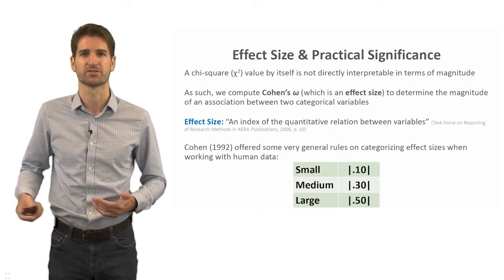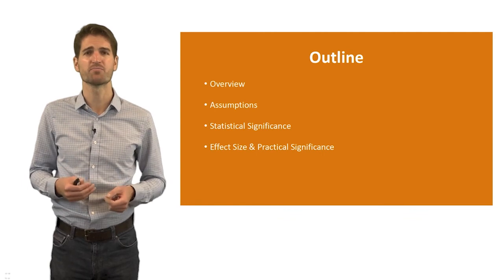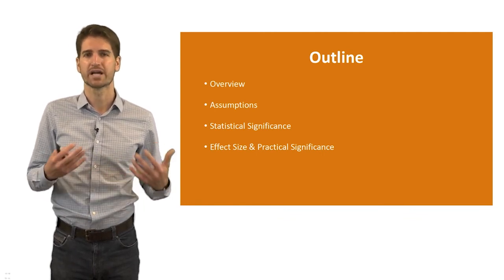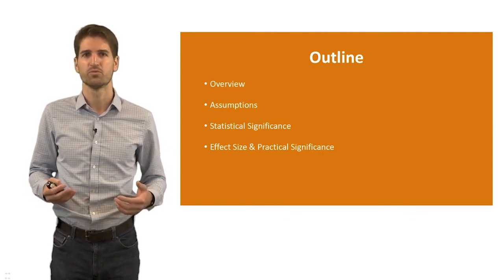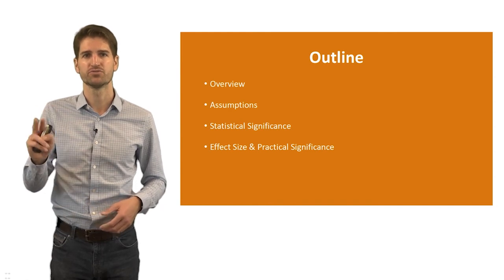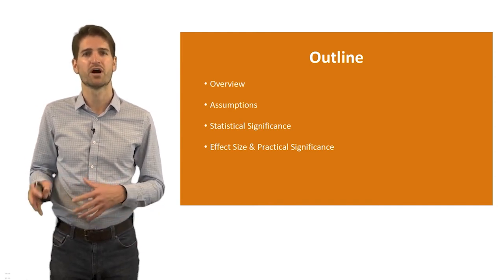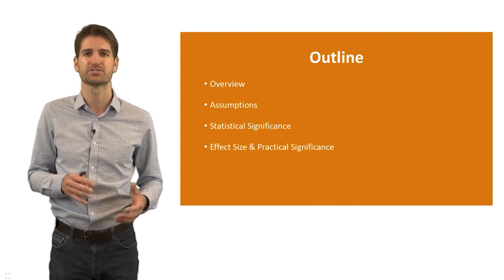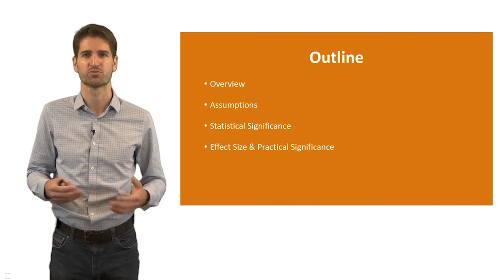To sum up, in this lecture we described what a chi-square test of independence is, discussed its two statistical assumptions, and covered statistical significance, practical significance, and effect sizes in the context of a chi-square test of independence.